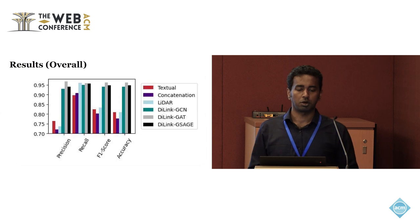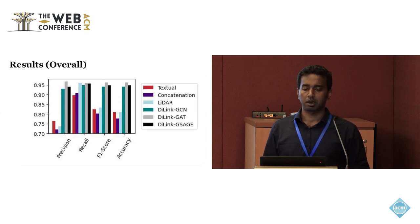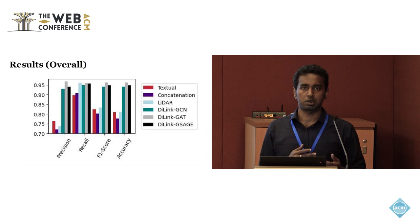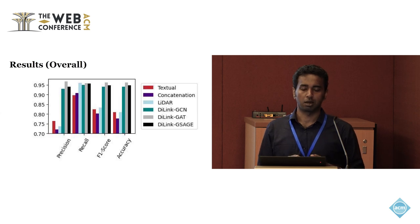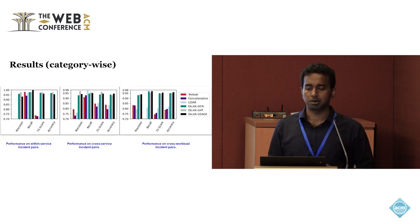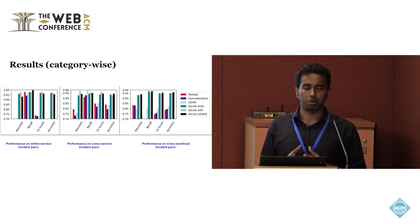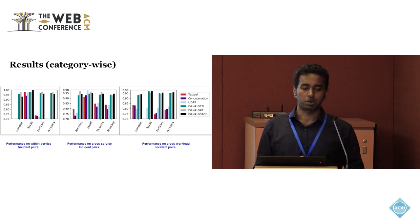The main results show that the direct concatenation model performs really badly — even worse than the baseline textual model. With LEADER, we get slightly better performance, about 1% gain in accuracy and F1 score. But when we use orthogonal Procrustes alignment with our DI-Link method, we achieve around 14 to 15% gain in F1 score and accuracy, reaching about 0.95 F1 score. We observed similar patterns for incident pairs within the same service, cross-service, and cross-workload. For cross-workload incidents, DI-Link with GraphSAGE slightly outperforms the Graph Attention Network, but in general, Graph Attention Networks perform better for other cases.